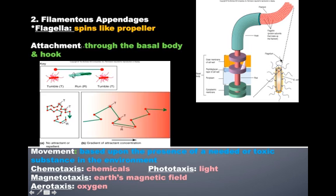Looking at the diagram, this is the hook itself. Notice how it's curved at a right angle. Then it has the basal body, which is embedded pieces of protein throughout both the outer cell wall, the peptidoglycan, as well as the cell membrane. The way this works is it actually whips around in a circle, creating more of an airplane propeller motion.